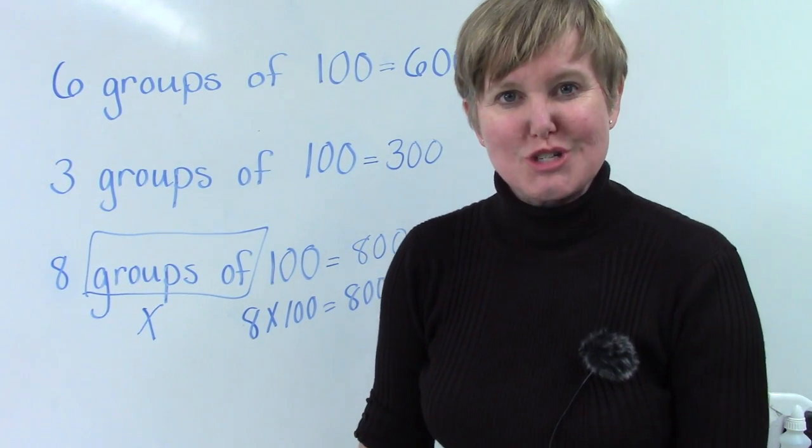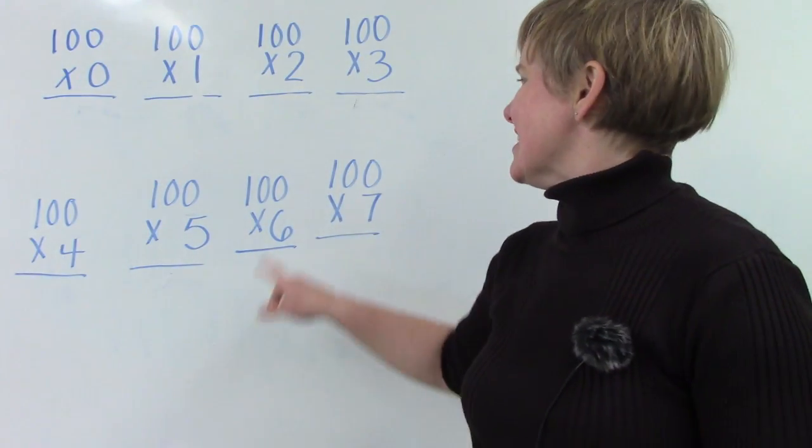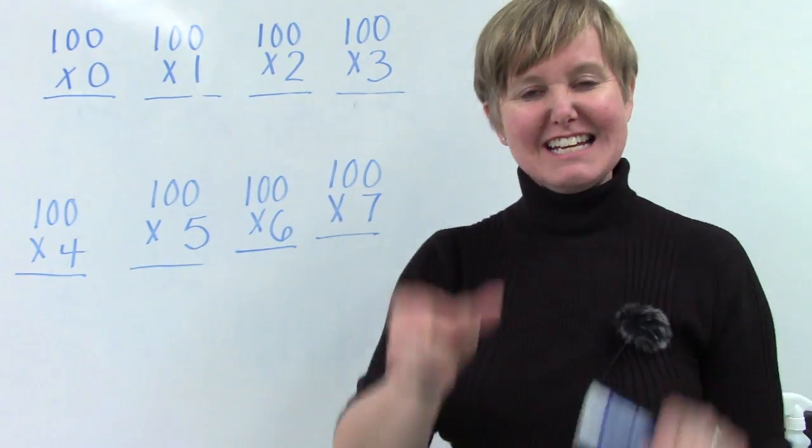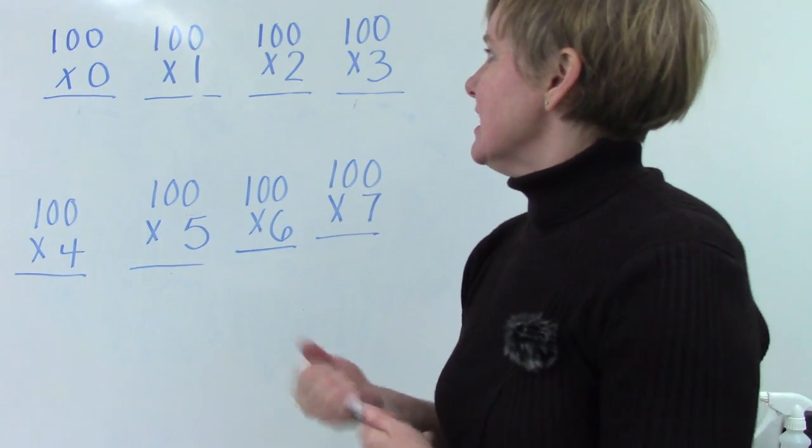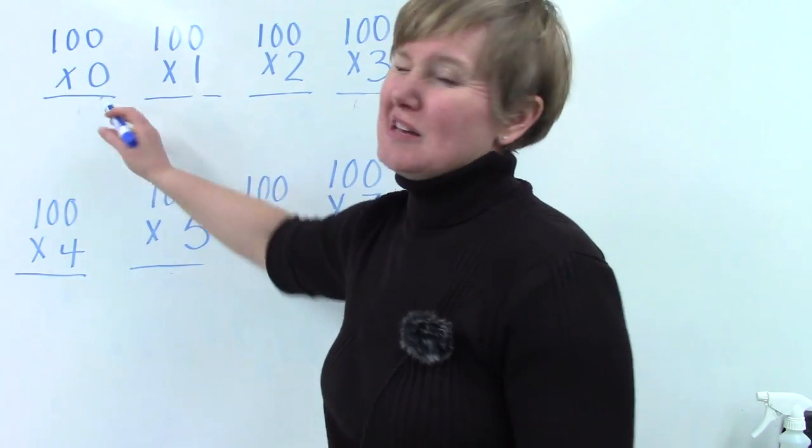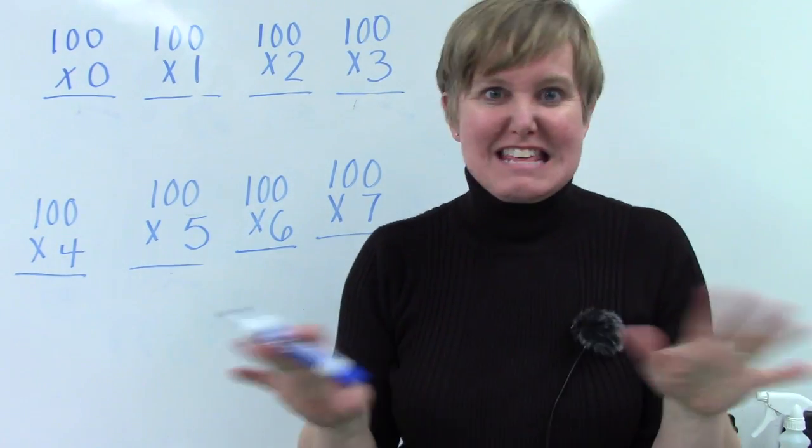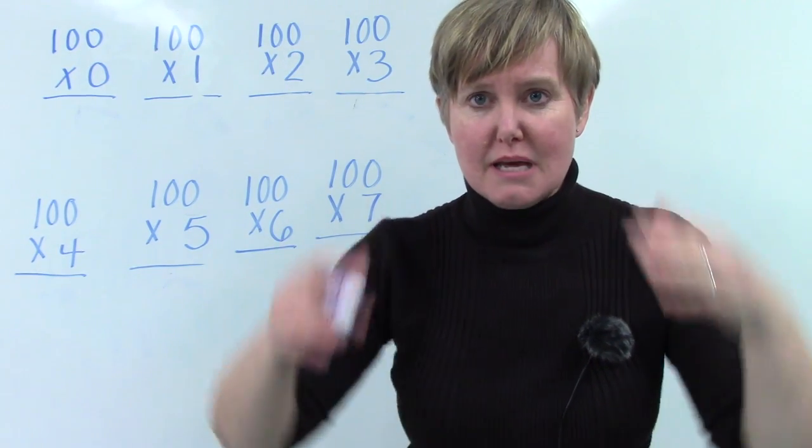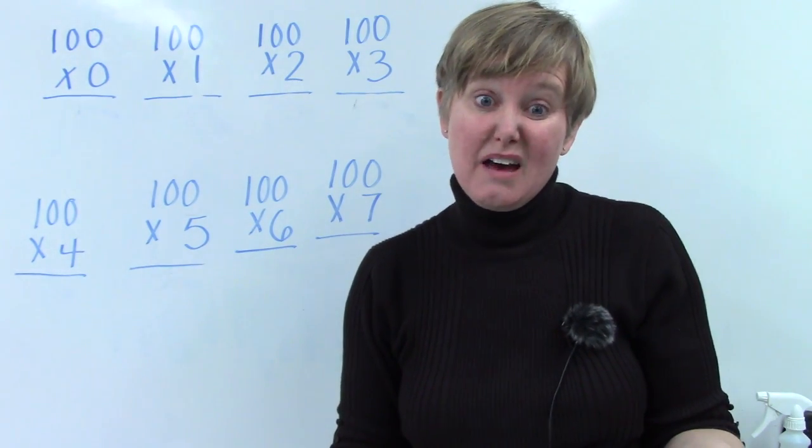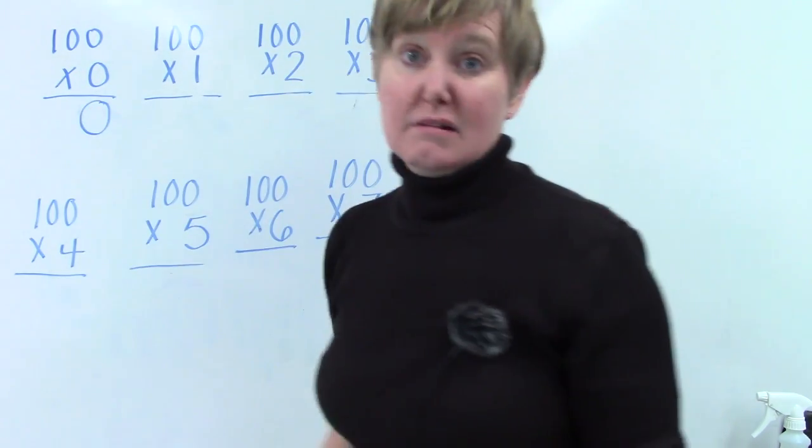Let's look at these questions written another way. We've written our multiplying by one hundred facts horizontally. Now let's look at them vertically. Here we have one hundred times zero or multiplied by zero. And whenever we multiply anything by zero, our answer is going to be zero. Because we're saying we have a hundred groups of nothing. And a hundred groups of nothing is, well, it's nothing.